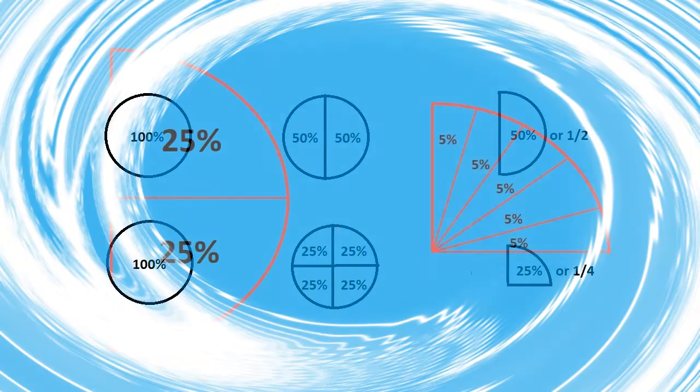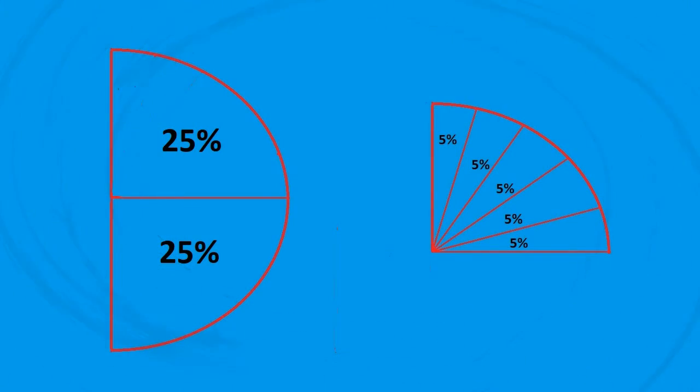Now, let us go a bit deeper into the concept. Here, I have divided one half, that is 50% of the whole, into two parts each. So what will be the value of each part? Yes, of course it will be 25%.